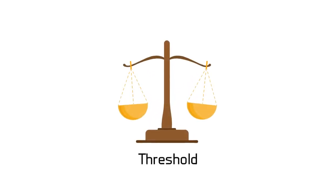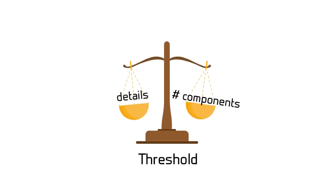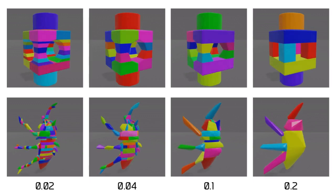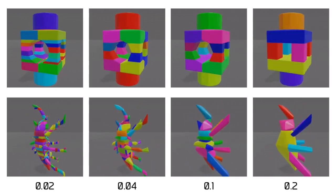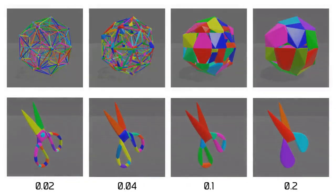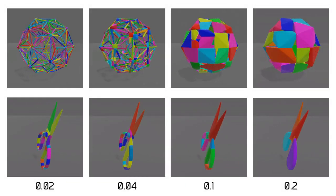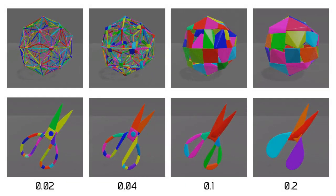Our method terminates when the concavities of all decomposed components are less than a predefined threshold. The concavity threshold thus balances the level of detail and the number of decomposed components. One can interpret our concavity threshold as the degree to which the original shape becomes thicker. It is thus more intuitive for users to adjust the threshold and achieve their desired composition.